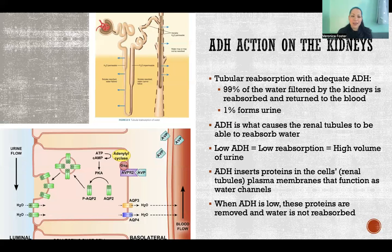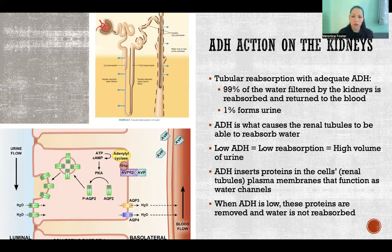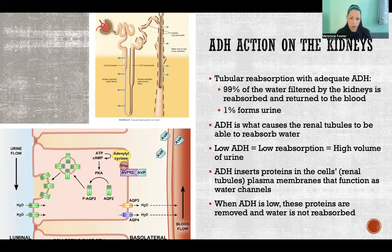ADH is necessary to make the renal tubules permeable to water. If there's no ADH present, the filtrate just passes through the tubule system without being reabsorbed, meaning all the water filtered from the blood is lost. This results in large amounts of dilute urine rather than reabsorption. Low ADH means low reabsorption and a high volume of urine output.